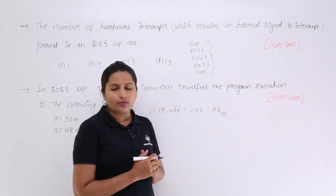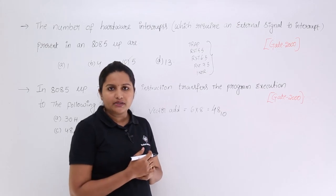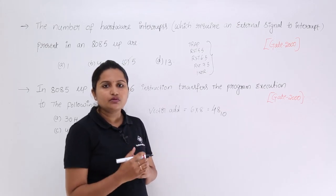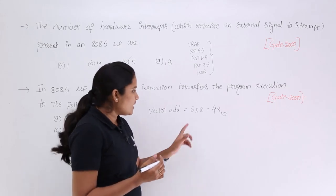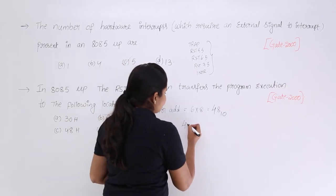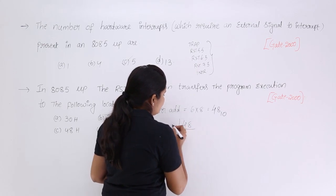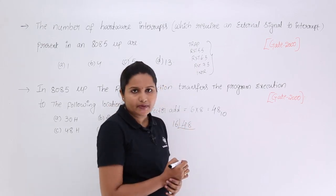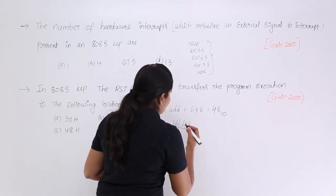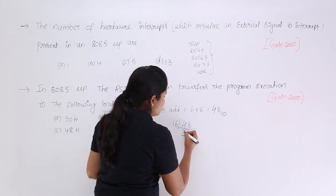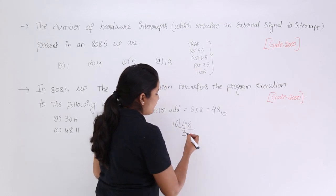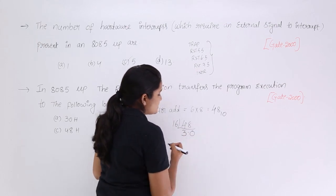That is nothing but in decimal form. To convert into hexadecimal we know the procedure we need to divide with respect to 16. Now 48 I am taking successive division with respect to 16. Here 16 into 3. 16 times 3 and here you are not having any remainder, that is 0.